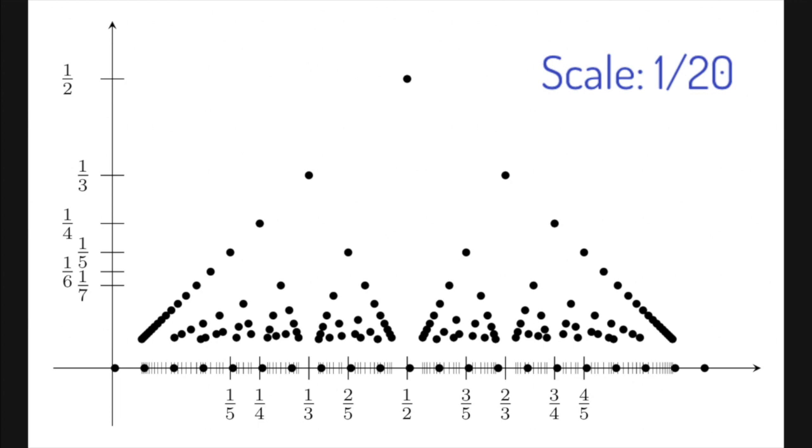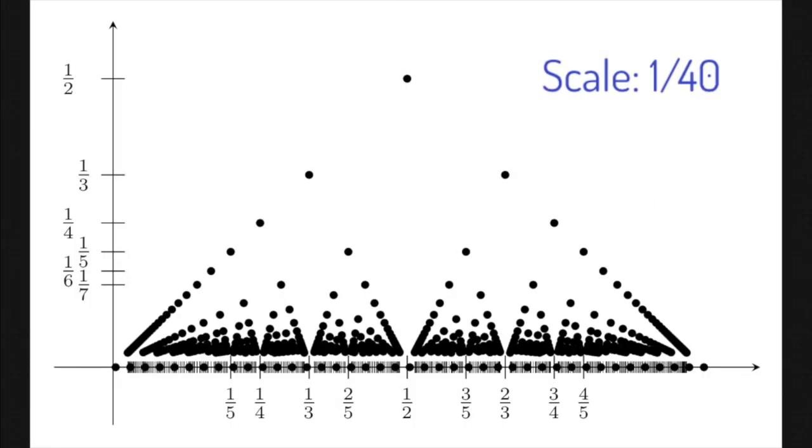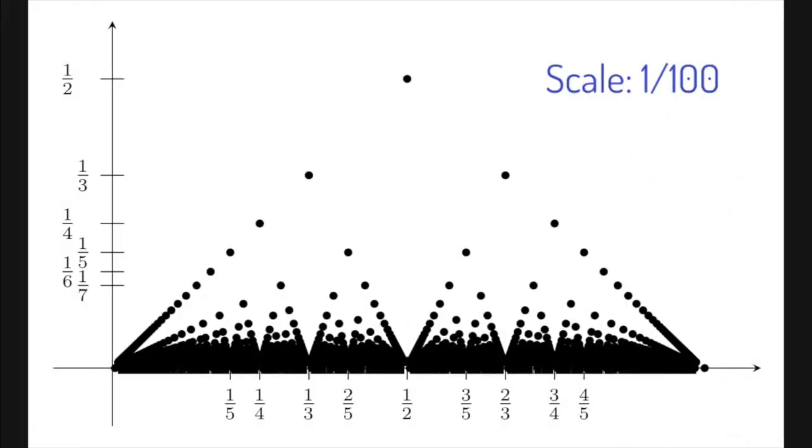On the next slide, we'll see an extreme. We'll take it to the scale one-fortieth and then one-hundredth. Here you can see that animation kind of breaks down and it's impossible to distinguish points near the bottom. But you get a general idea of how the function looks like.